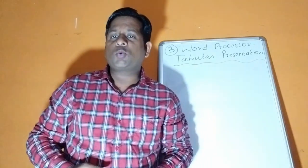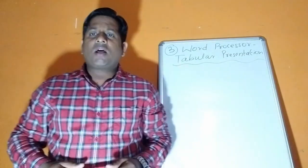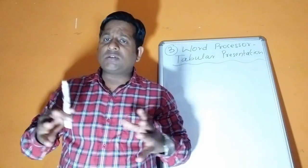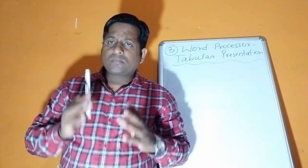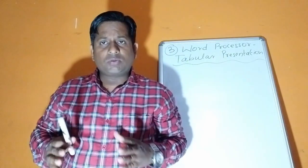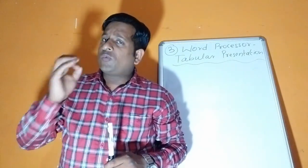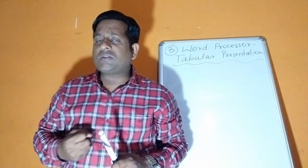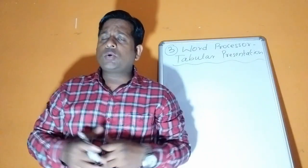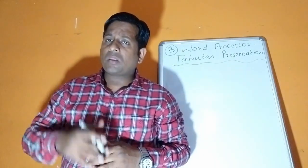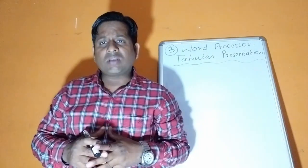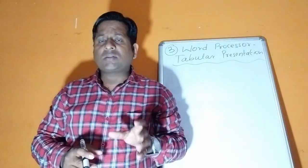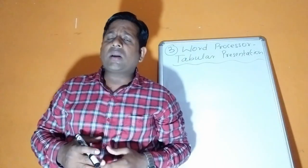Good morning children and welcome back to our online class. In the last video I had explained you about what is table in Microsoft Word and for what purpose it is used. You understood that we use tables for storing values in a systematic order so that if you need to fetch or retrieve them, it becomes easy. The table contains multiple rows and multiple columns, and their intersection is known as a cell. We also learned how to enter data in a cell, so today we'll be learning some more things about cells.